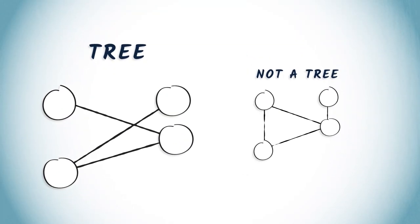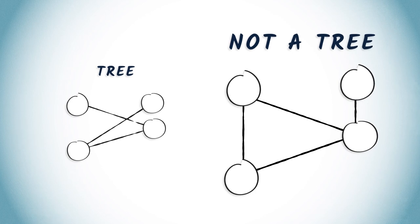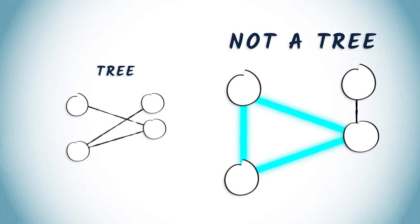As we have seen in the previous lesson, a tree is a connected graph with no cycles. For example, on the left is a drawing of a tree. However, the graph on the right is not a tree because it includes a cycle.